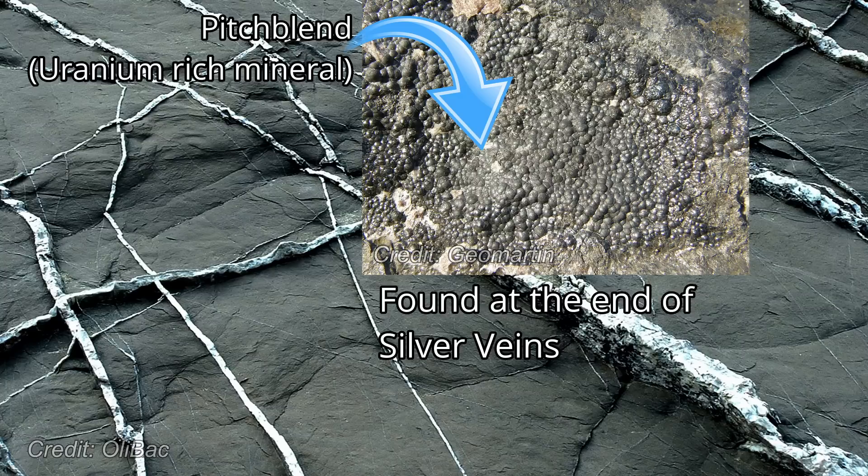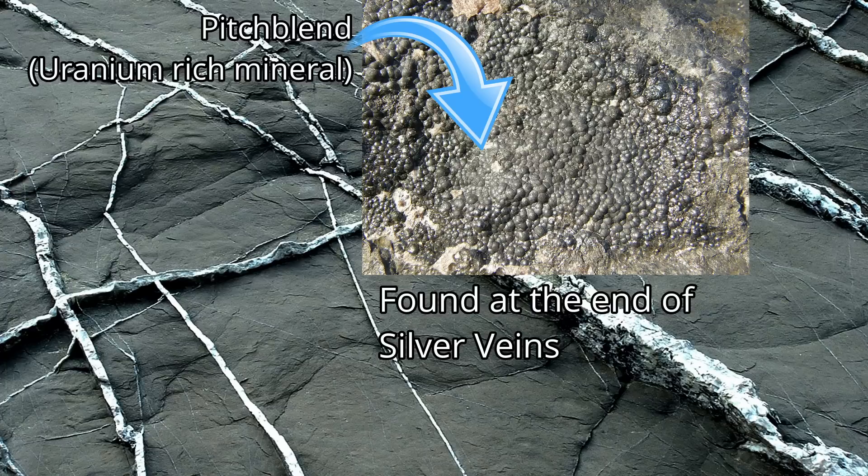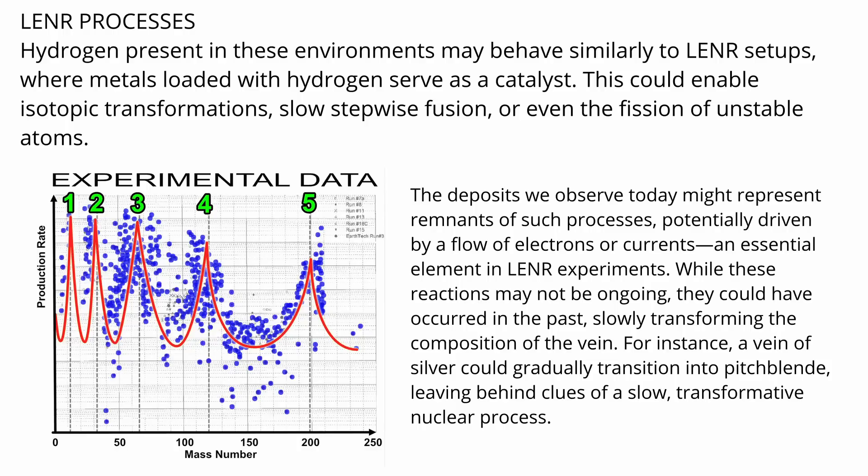Similarly, the discovery of uranium deposits at the ends of silver veins in certain mines presents another intriguing puzzle. While such occurrences are often explained by hydrothermal processes or secondary mineralization, these explanations may not fully account for the presence of uranium in these unexpected locations. LENR offers an alternative perspective suggesting that low energy nuclear reactions under specific geophysical conditions could contribute to the formation and redistribution of these elements.